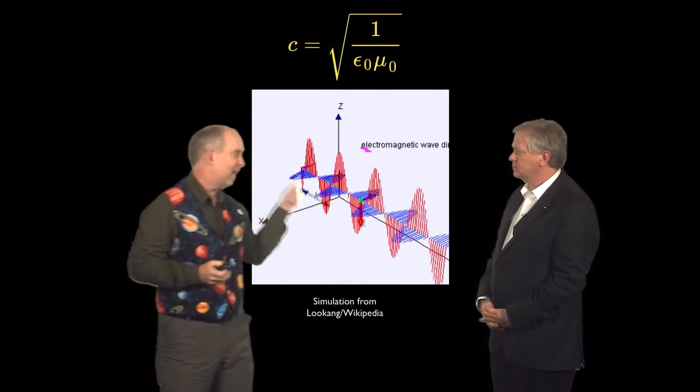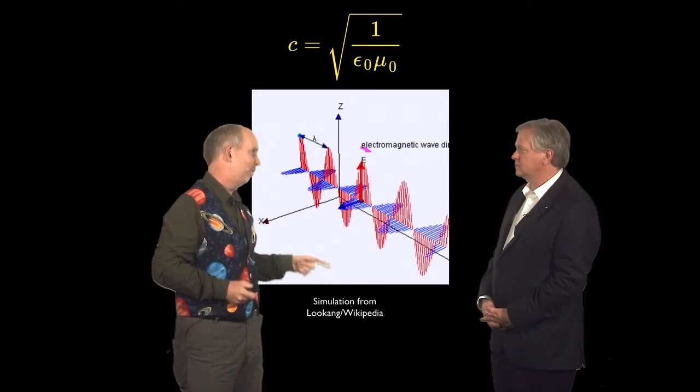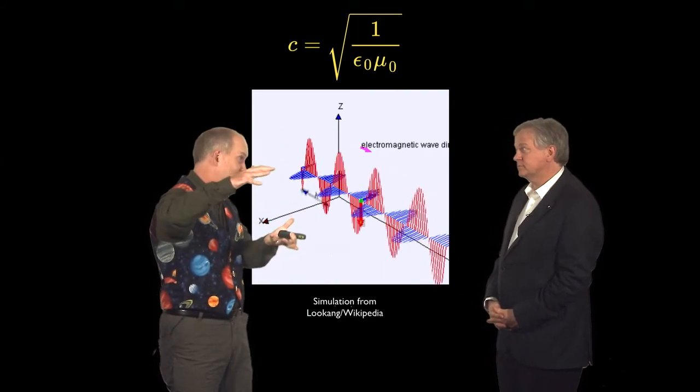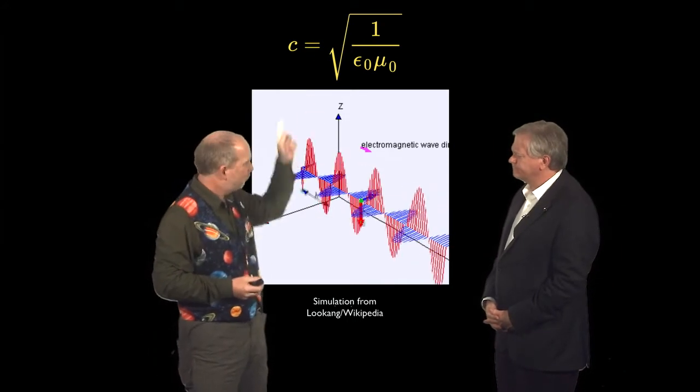But that can't work because remember what produces a magnetic field is a changing electric field. What produces an electric field is a changing magnetic field. So if it's just sitting there, it's not changing. Yeah, so that would be problematic. They have to move to exist.